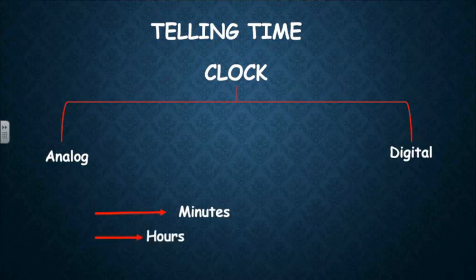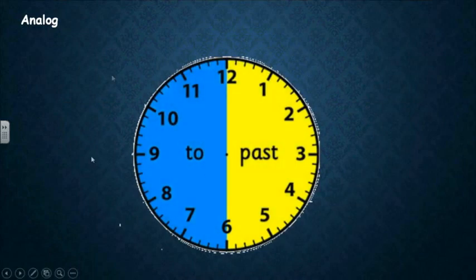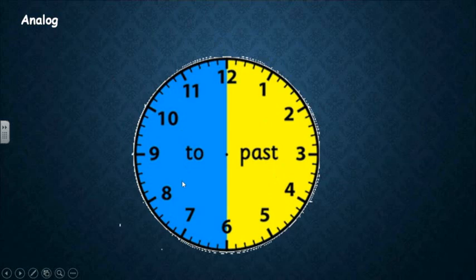In this session, we will talk about the analog clock. If we have this clock, the clock is divided into two parts: past and to. So we have two parts in the clock — the right one which is called past, and the left one which is called to.